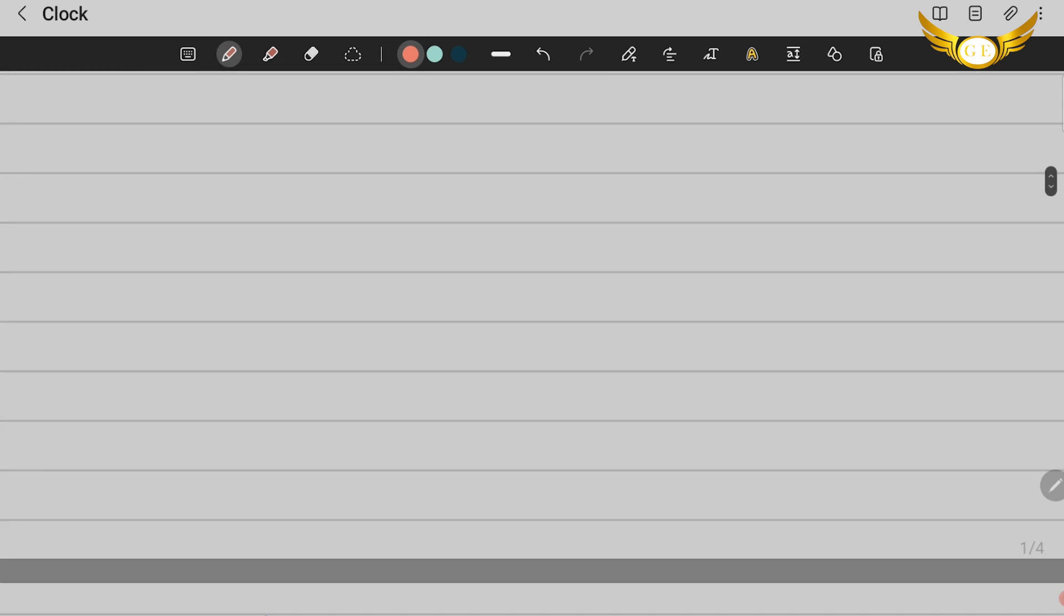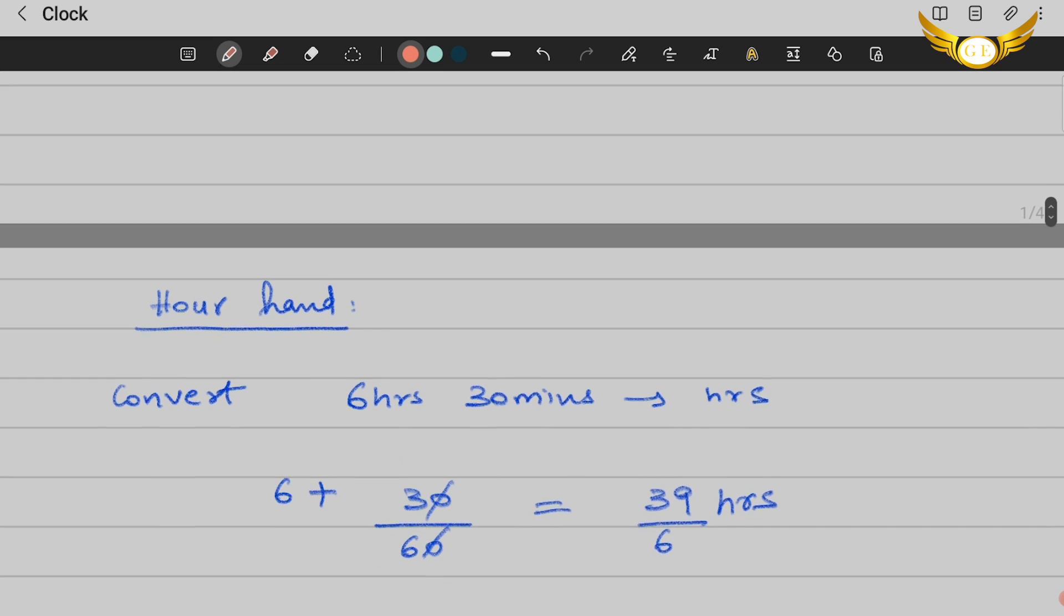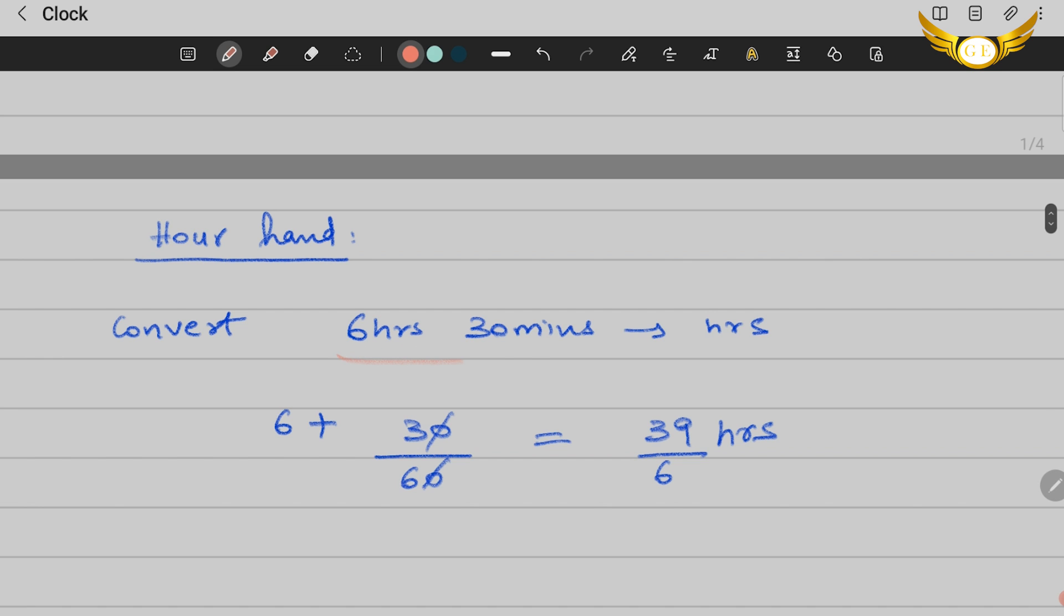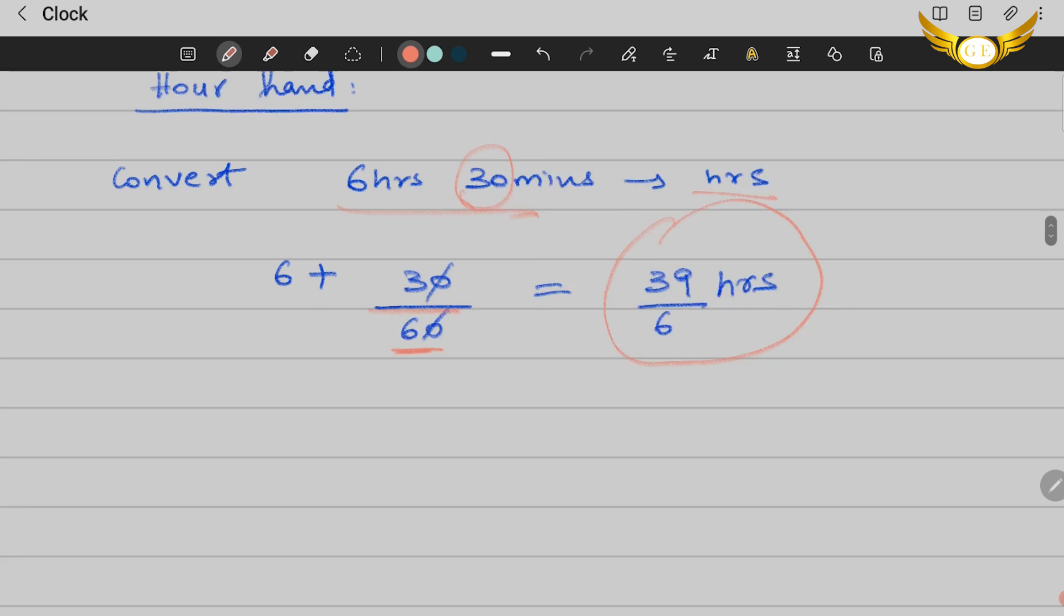First, let's work with the hour hand. Convert 6 hours and 30 minutes to hours by converting the minutes: 30 by 60. You get 39 by 6 hours. We will keep it like this for better understanding.